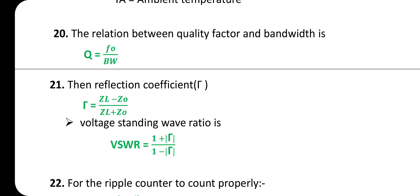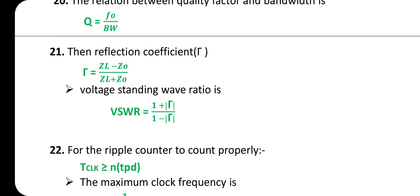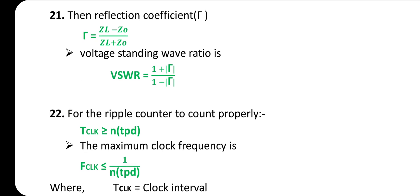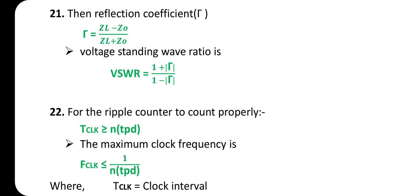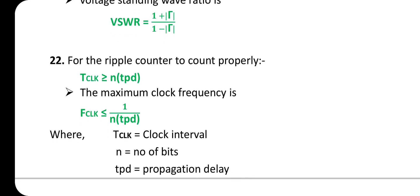Twentieth one: The relation between quality factor and bandwidth is Q = f_0 / bandwidth, where f_0 is the resonant frequency. The reflection coefficient = (Z_L − Z₀) / (Z_L + Z₀). Voltage Standing Wave Ratio (VSWR) = (1 + |Γ|) / (1 − |Γ|).